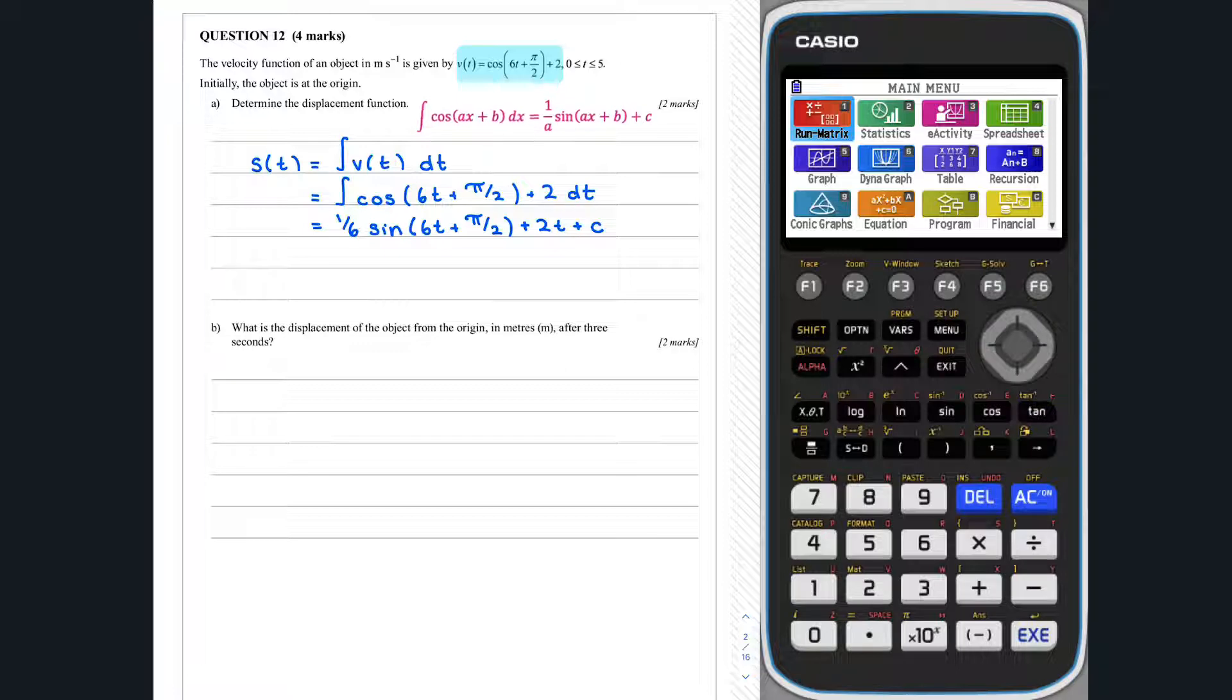In the question, we are told that the object is initially at the origin. This tells us that s at 0 is equal to 0, and allows us to solve for c, the integration constant.